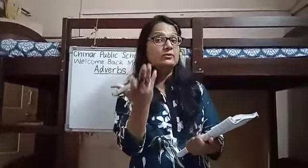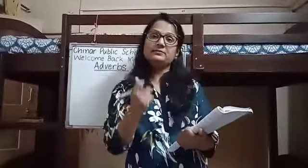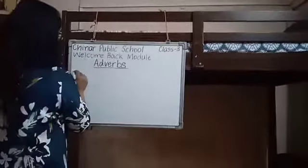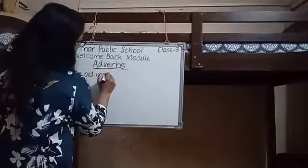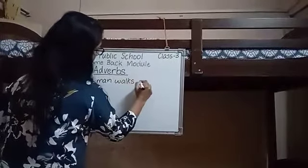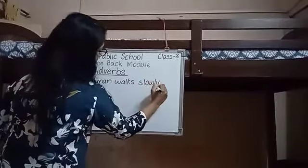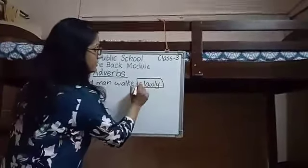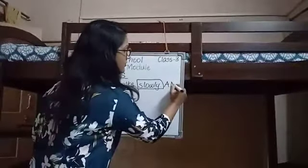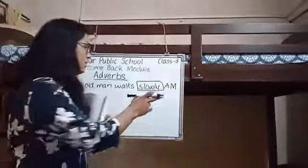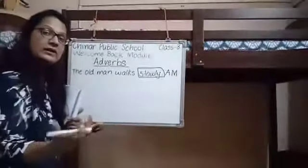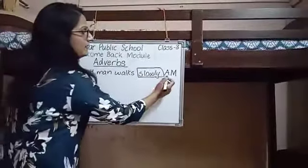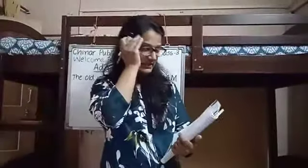Adverbs of manner — it tells us how the action is done. For example: the old man walks slowly. Here, 'slowly' is the adverb of manner because it is telling you how this old man is walking. How is he walking? Slowly. So it becomes the adverb of manner.